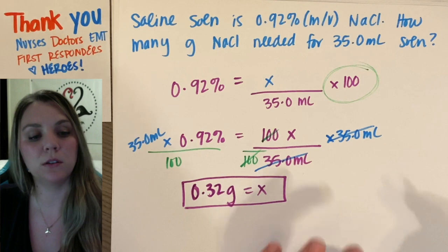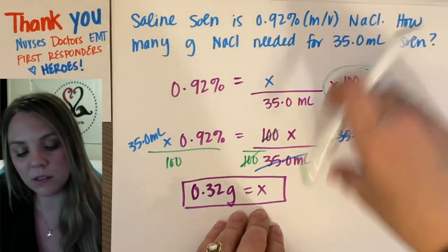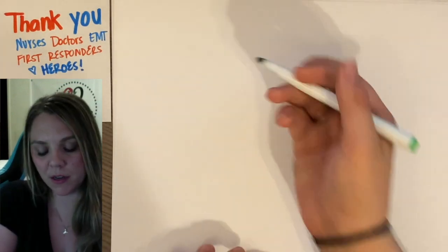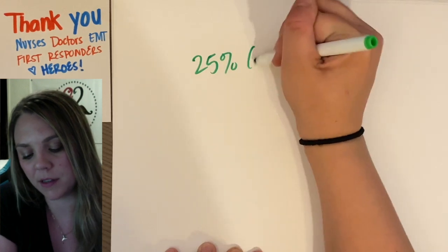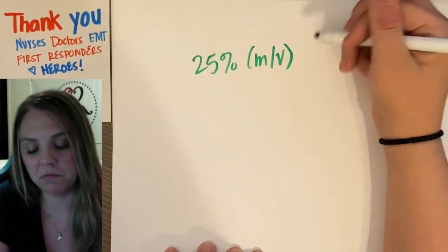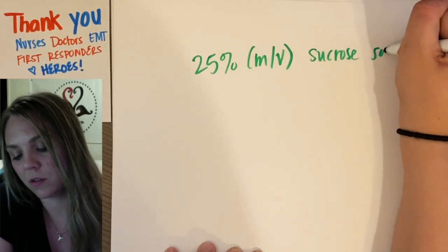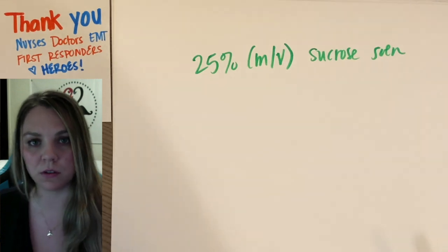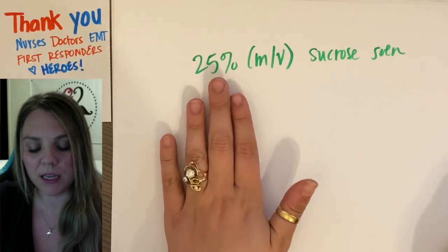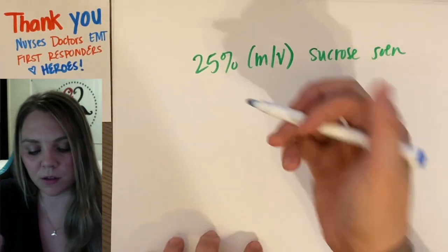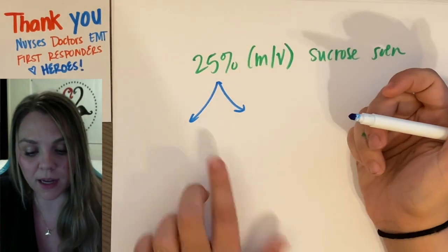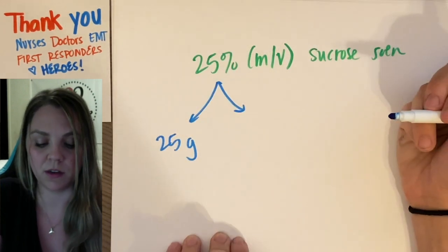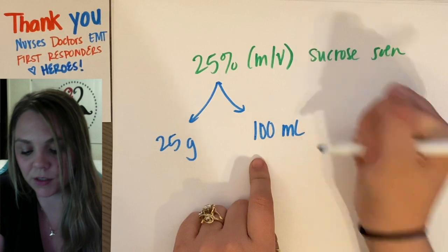I guess, so if they might ask you like a theoretical type question, right? Just like theoretically, if you had a 25% mass by volume sucrose solution, they might ask you how many grams of sucrose or how many milliliters of sucrose or what you do? If they're asking like a theoretical question, what this means 100% of the time is a 25% mass by volume solution.